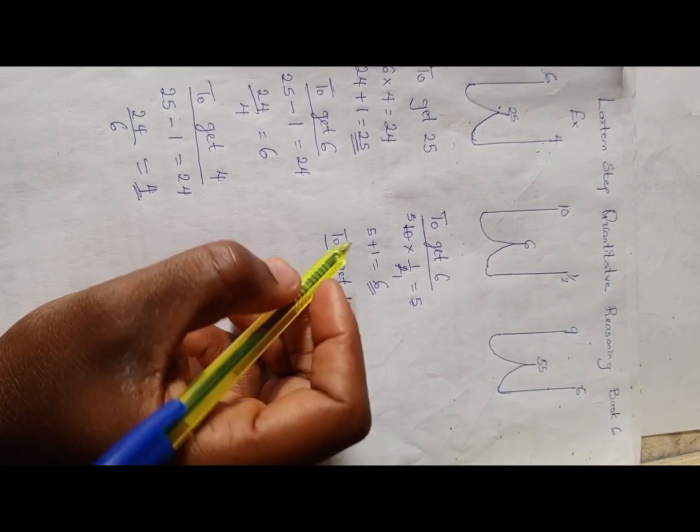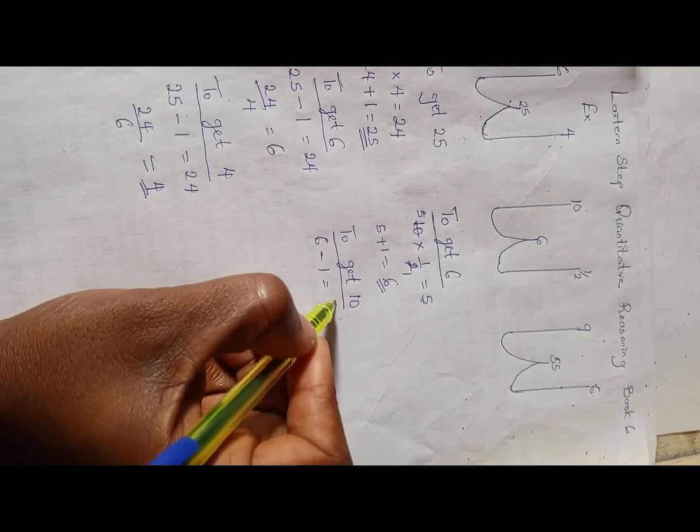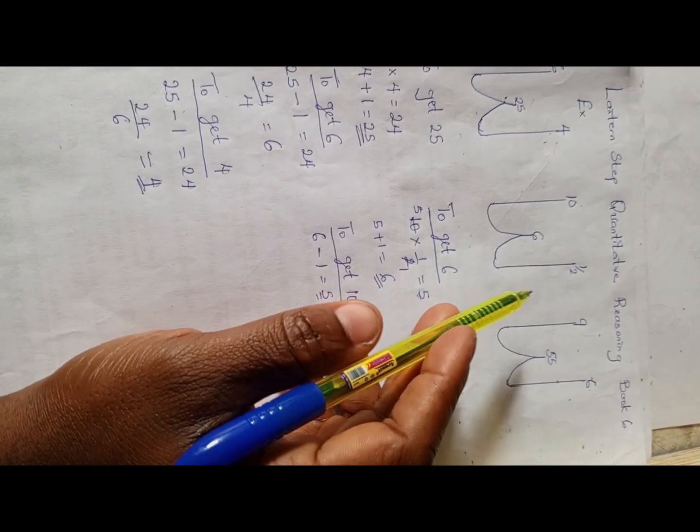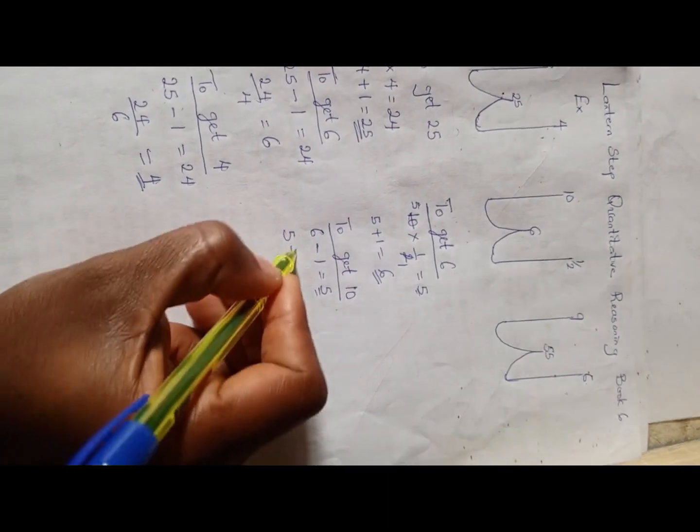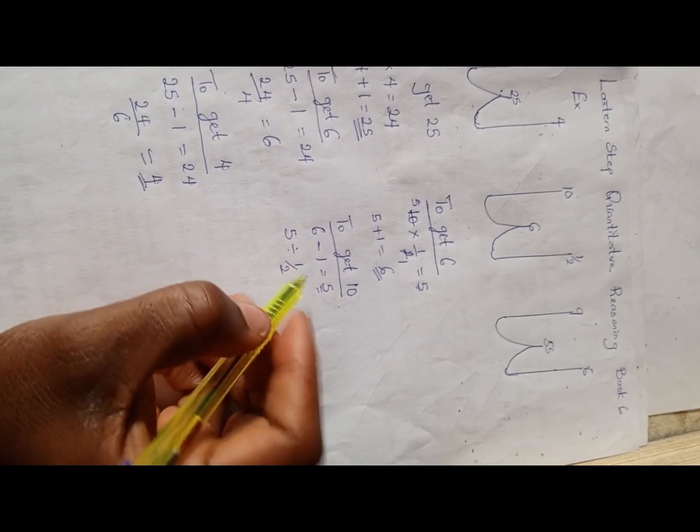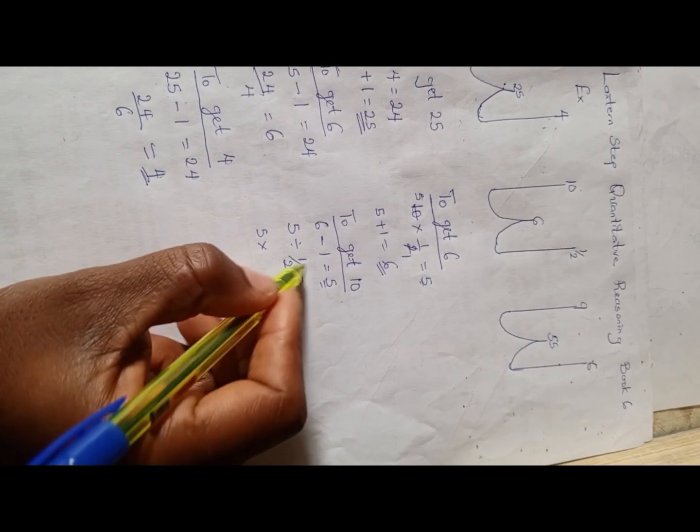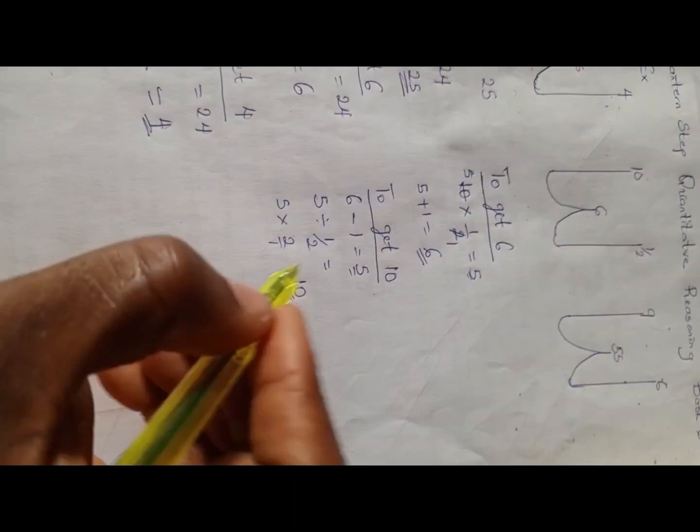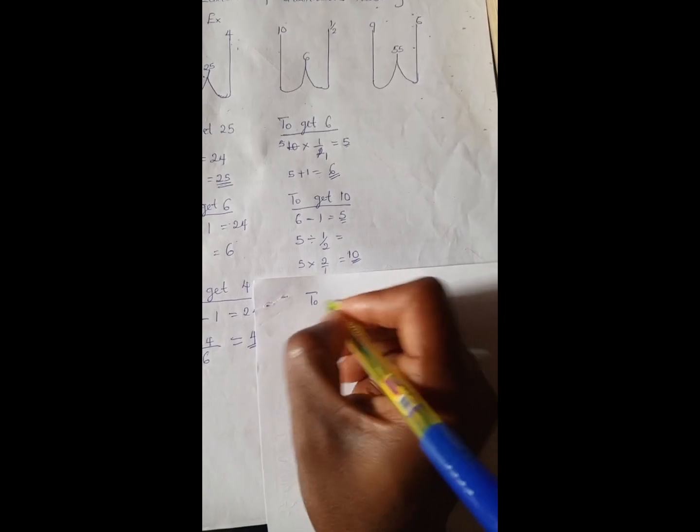To get 10, we're going to have 6 minus 1, which is 5. And remember we're trying to get 10, so we have 5 divided by 1/2. 5 divided by 1/2 means we have the reverse of this: 2 over 1, which is 10.